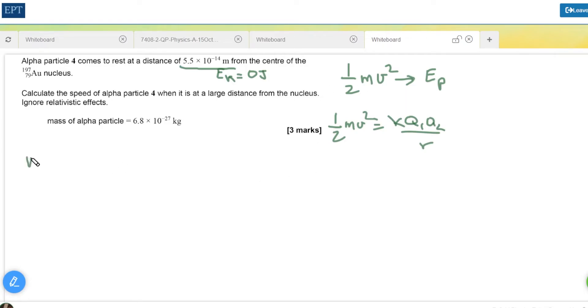Rearranging these formulas we get that v squared equals 2k q1 q2 all over mr. Remember of course that k is 1 over 4 pi epsilon 0. Now it's just a question of substituting in the values.